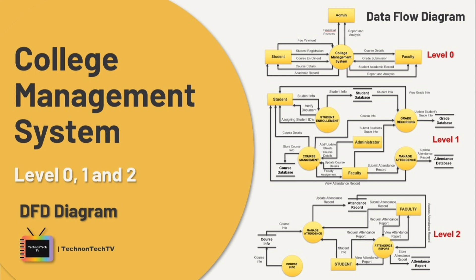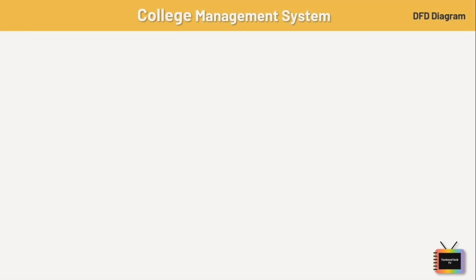The overall college management system is represented and described using input, processing, and output in DFD. It basically provides information about the inputs and outputs of each process and entity of college, such as student, faculty, courses, admin, library, etc. This DFD diagram for the college management system uses defined symbols that present the system's processes.